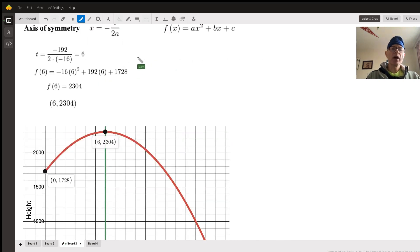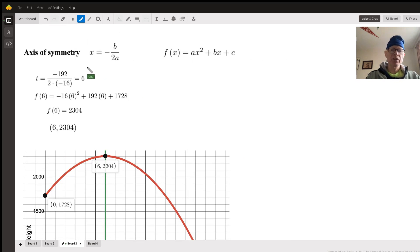All right. That's not the only way we could have found that. We could have used the axis of symmetry. The general form of a quadratic is this, where we're in the ax squared plus bx plus c form. And if that's the case, then the axis of symmetry is going to be equal to the opposite of b over 2 times a. So our b was 192, the opposite of that is negative 192. A was negative 16.